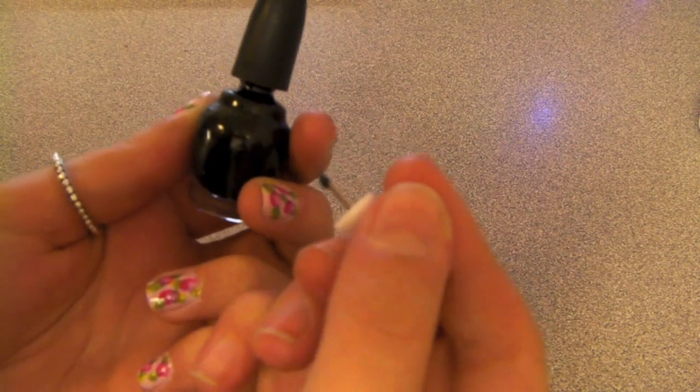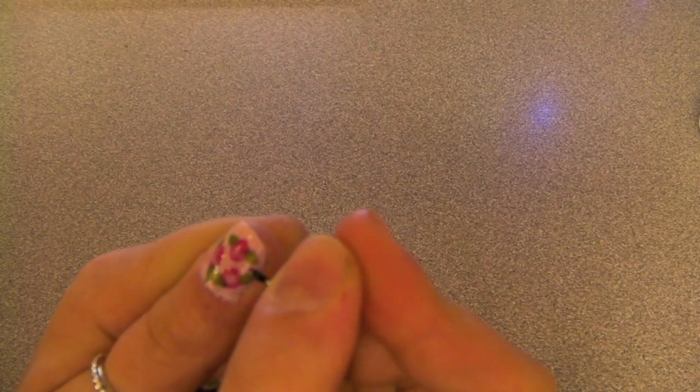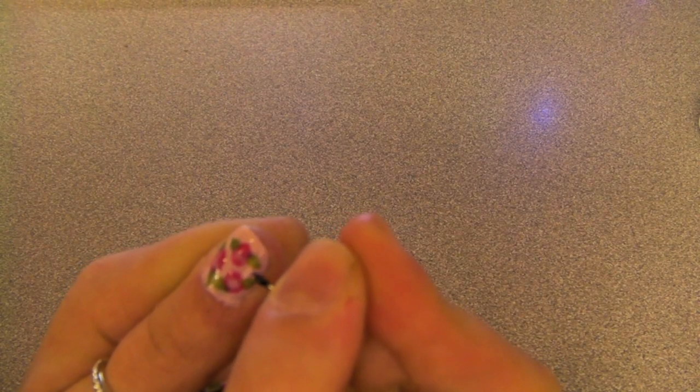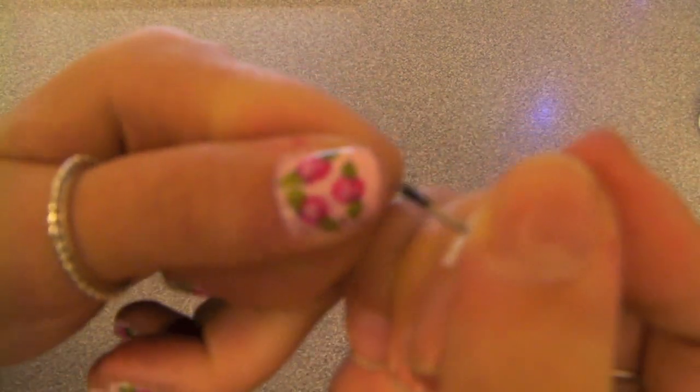Now take a black nail polish and make tiny dots on the light pink parts of your nails. I'm using this tack, but you could use a toothpick, pin, or whatever works best for you.